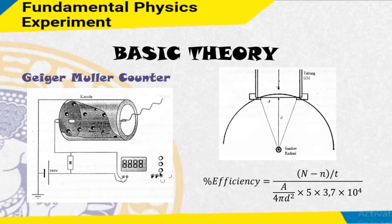On the right side, as you can see, is the schematic illustration of how the radiation source comes through to the Geiger-Muller tube, and also how we can calculate the efficiency percentage from this analysis.